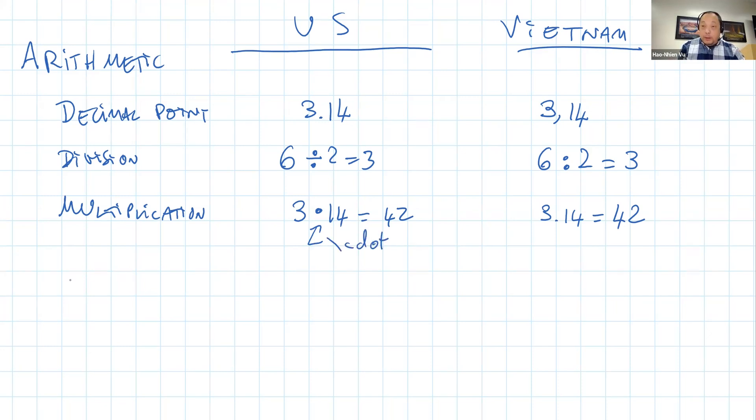Talking about multiplication, Vietnamese also has a different habit in doing long multiplication. In the US, if we're doing 23 times 12,